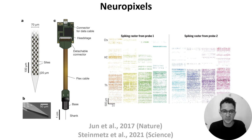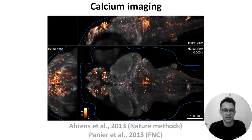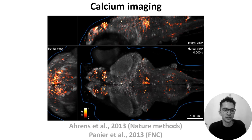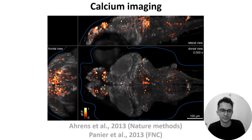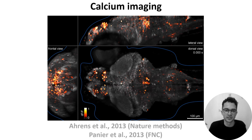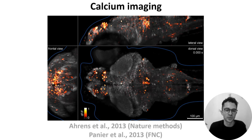So how can we get more comprehensive coverage? One alternative is calcium imaging. Remember that when an action potential reaches the axon terminal, it causes voltage-gated calcium channels to open and calcium to flow into the cell. So we can use changes in calcium concentration to infer neural activity.